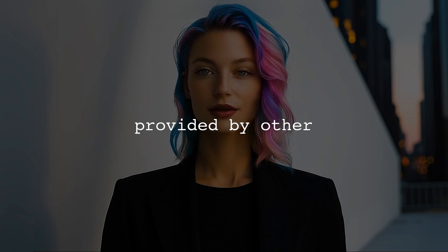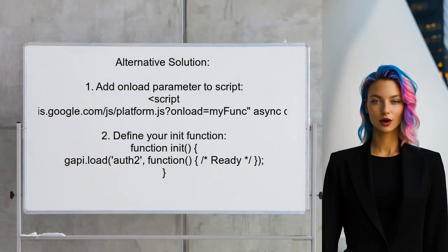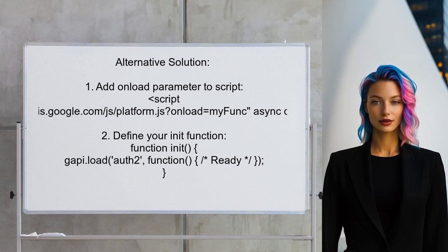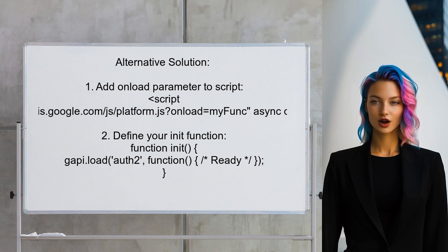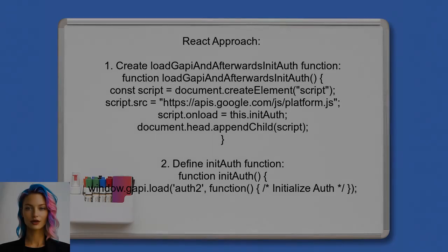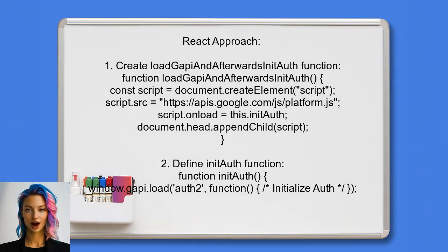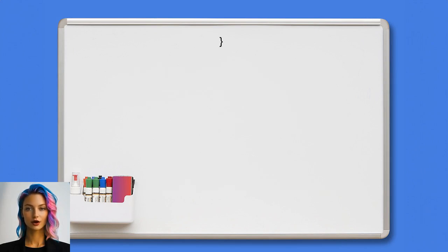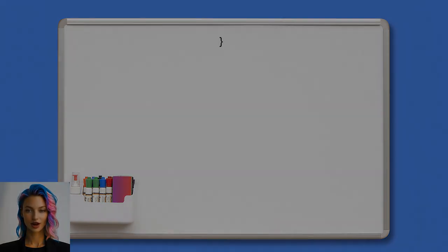Now let's look at the answers provided by other users. An alternative solution suggests adding an onload parameter to the script link. This ensures that the gapi library loads correctly before calling the load function — you can include a script in the head tag with the onload attribute set to your initialization function. For React applications, the recommendation is to create a function to load the gapi script dynamically. This function appends the script to the document head and initializes Google Auth after the script loads.